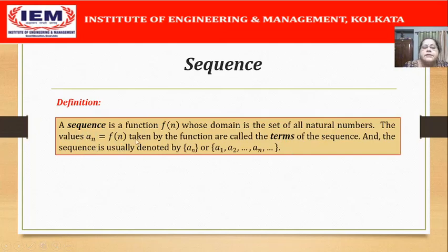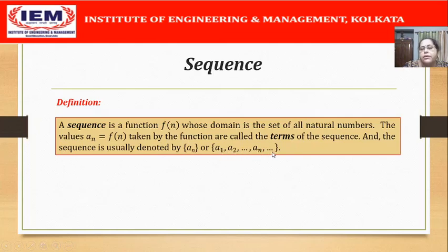The sequence is denoted as {a_n} written in curly braces, or in an explicit form — that means we write the elements a_1, a_2, dots, a_n, dots written in curly braces.